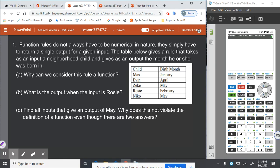So if we take a look at this, we can consider this one a function because Max is only paired with one birthday month. Evan is only paired with one birthday month. Zeke only has one birthday month. Rosie only has one birthday month. And Nico only has one birthday month.